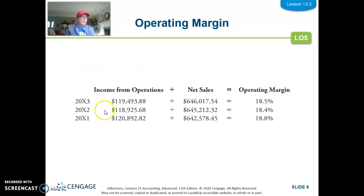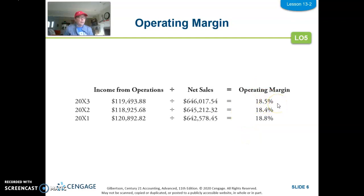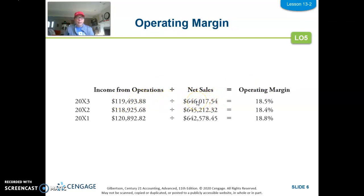Operating margin is income from operations divided by net sales, and both come from the income statement. This company has an 18.5% operating margin, meaning for each dollar of sales they're earning 18.5 cents in operating income — after operating expenses are taken out — to cover other revenues, expenses, taxes, and desired profit. The target for this company was 18 to 22%, so they're barely in range. They'll want to grow net sales quicker than operating costs, perhaps cut some expenses while still generating at least the same level of sales.